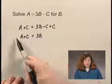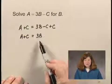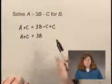Now there are no terms containing B on the left side. There's only one term containing B on the right side. So I divide both sides by 3.